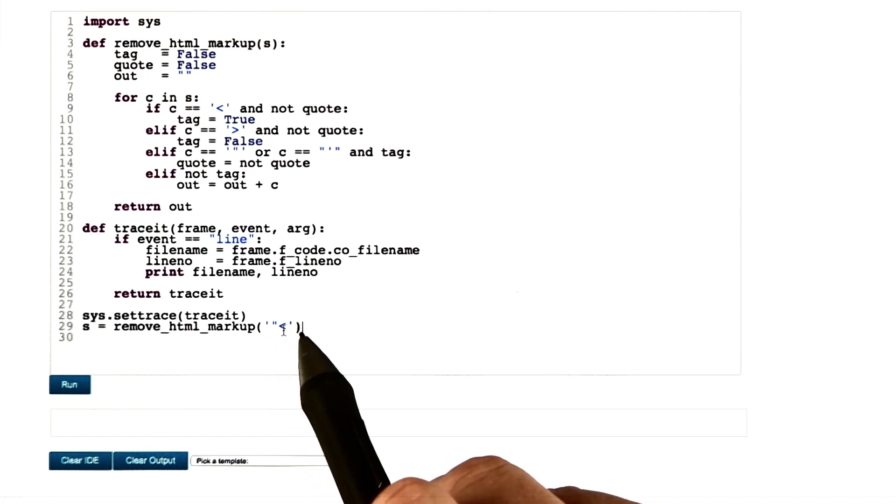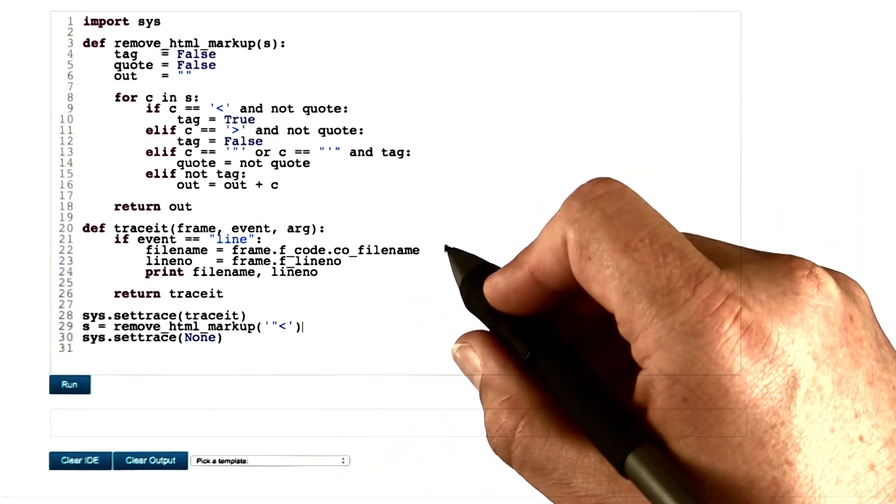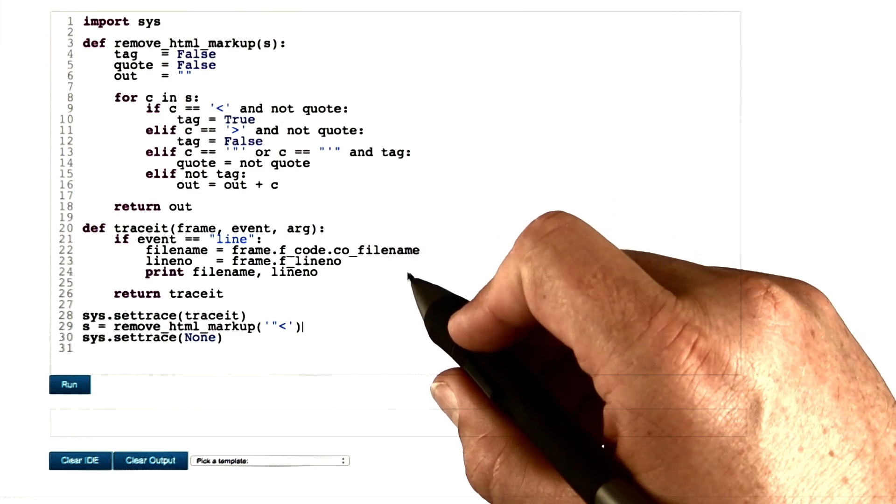And we feed it with this very simple input, just two characters, double quote and less than sign, which should expose the error. If we now go and execute this, then we should be able to see a sequence of lines as they're executed.